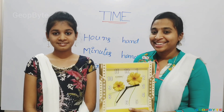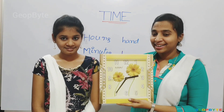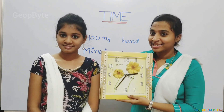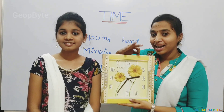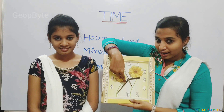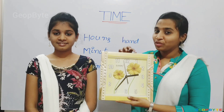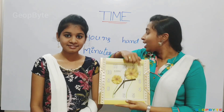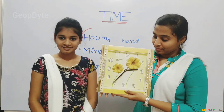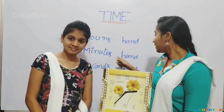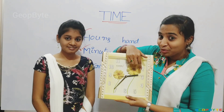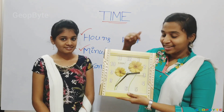Now, let us learn how to see the time in a clock. See kids — there are three hands in this clock: the short hand, the long hand, and the fast-moving hand. The short hand is the hours hand. The long hand is the minutes hand. This fast-moving hand is the seconds hand.